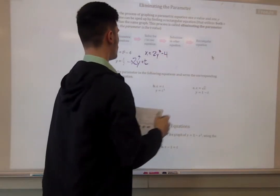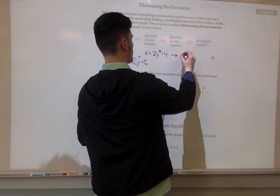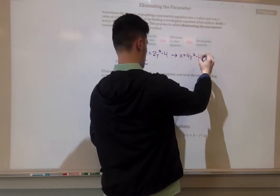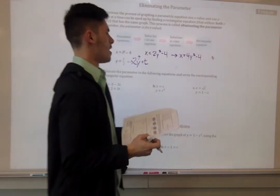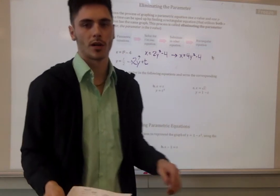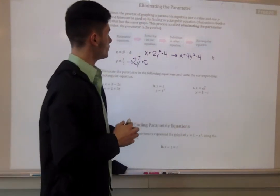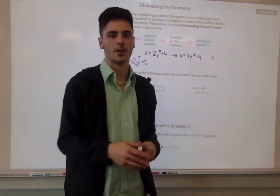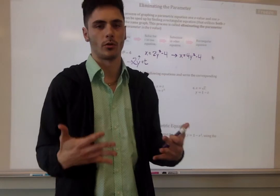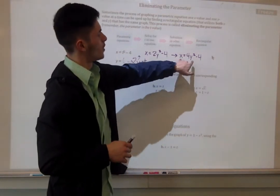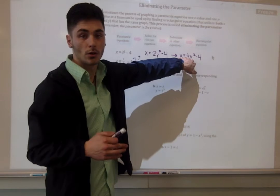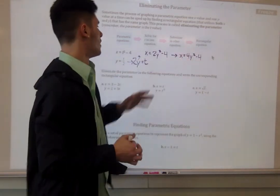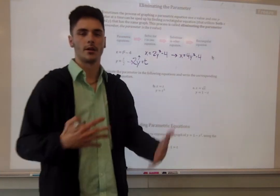That ends up being x equals 4y squared minus 4. We can simplify for x if we have to, but it doesn't say that we have to. If it says write your rectangular equation in terms of y, or something like that, or in terms of x, then you can differentiate between what you need to solve for. But as long as you substitute back into the other equation, and it's correct, you've got the rectangular equation. Pretty simple on doing that. You guys already know the skill. It's just applying it in a different way.